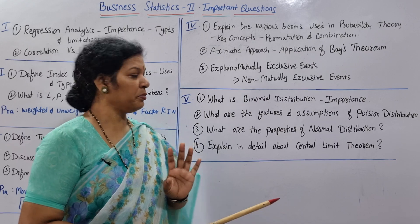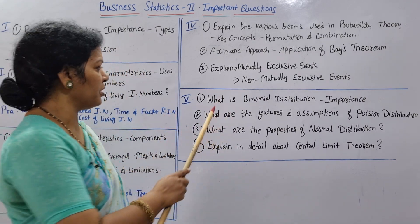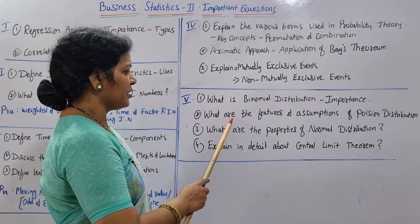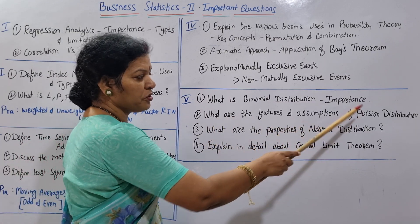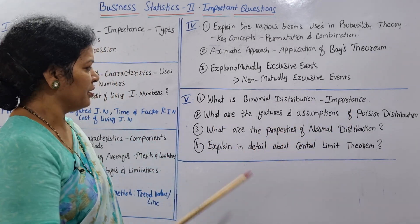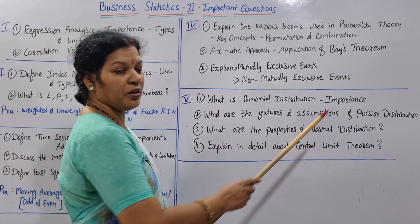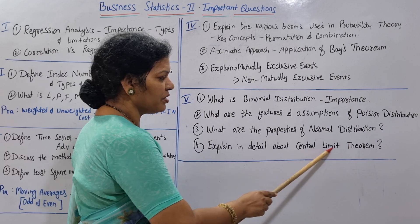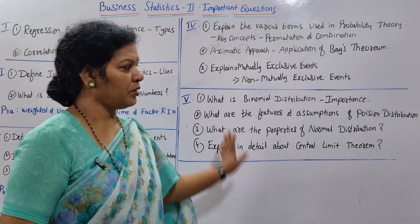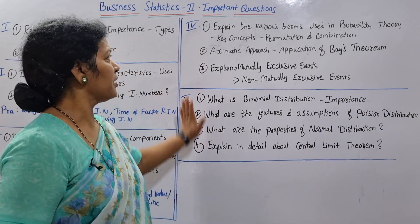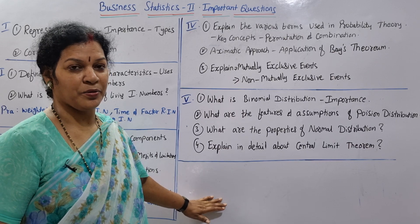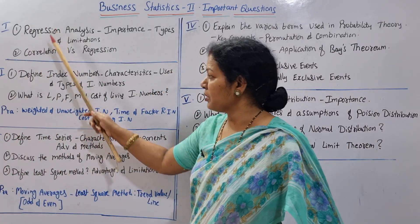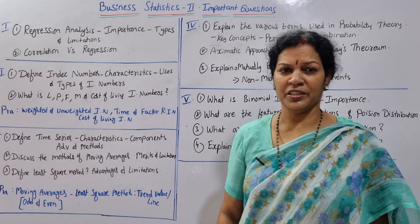In the fifth unit, there are four questions. First: What is Binomial Distribution and its importance? Second: What are the features and assumptions of Poisson Distribution? Third: What are the properties of Normal Distribution? Fourth: Explain in detail the Central Limit Theorem. In total, you have about seven theory questions across the mathematics units, plus practicals. Leave your subject questions in the comment box.